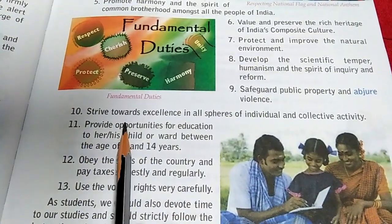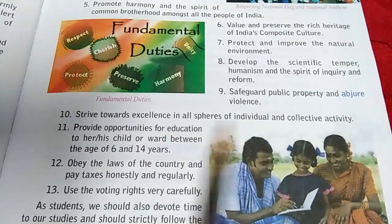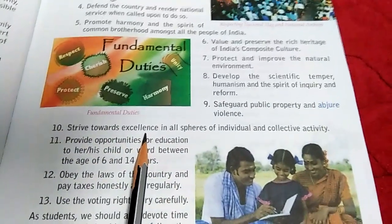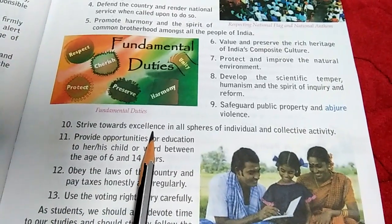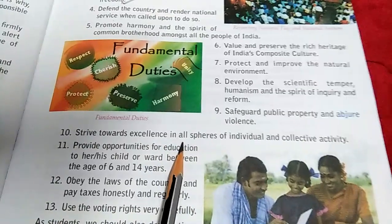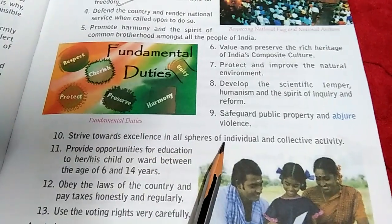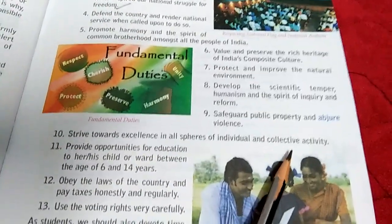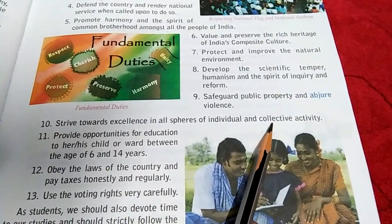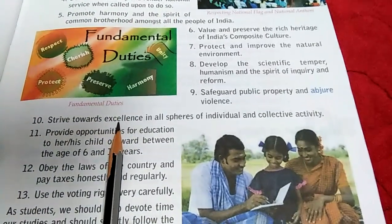Then, strive towards excellence in all spheres of individual and collective activity. One should always strive — that is, struggle towards excellence — to be the best and to achieve 100%. This applies to all spheres: academic life, social life, and everything else. In collective activity, all people in the group should work hard together to achieve this excellence.